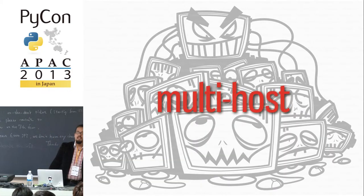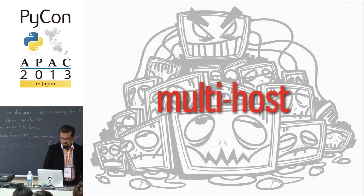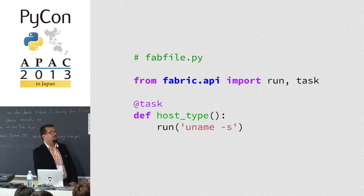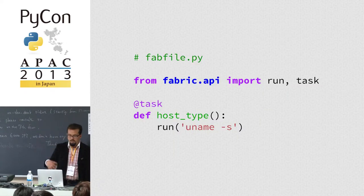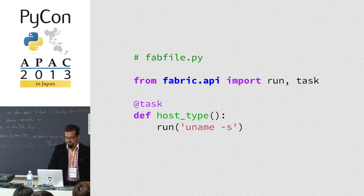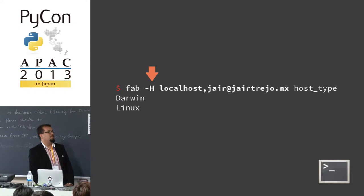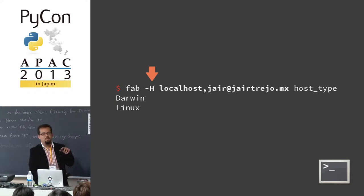By taking advantage of SSH, Fabric can run on multiple hosts. You can define a task and using the run function you can run arbitrary commands on remote servers. You can specify the hosts very easily — here there's a command line flag — and I can run it on my machine and a remote machine. It runs them sequentially.